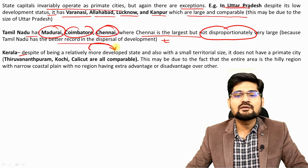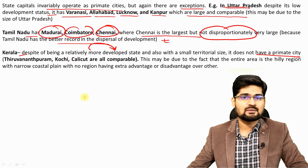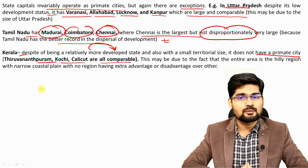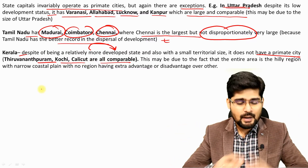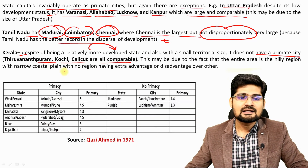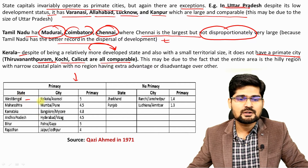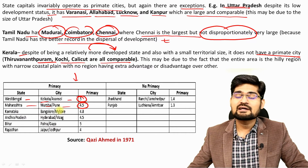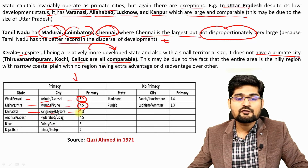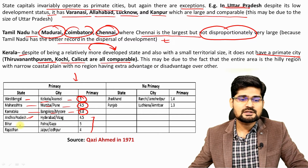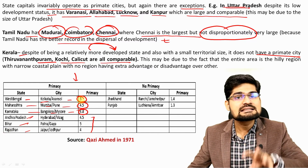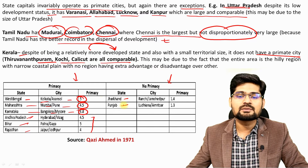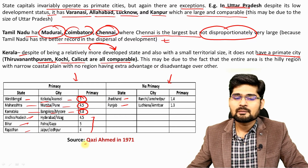In Kerala, despite being a relatively more developed state, there is no primate city — Thiruvananthapuram, Kochi, Kozhikode and others have comparable population sizes. However, in other states primacy is found: West Bengal has Kolkata and Asansol at five times ratio; Maharashtra has Mumbai and Pune at 4.5 times; Karnataka has Bangalore and Mysore at 4.8 times. Andhra Pradesh, Bihar, and Rajasthan also show primacy. No primacy exists in Jharkhand and Punjab. This is from a study by Kazi Ahmed in 1971, highlighting problems of scale in application.